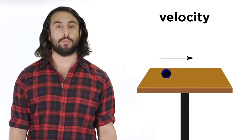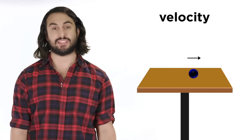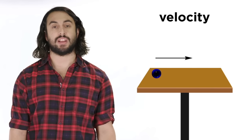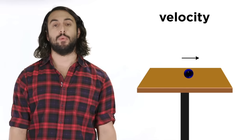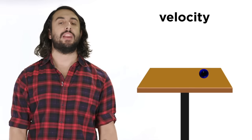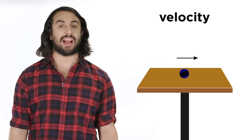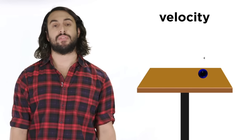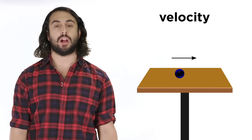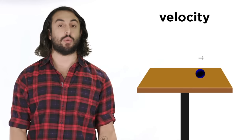For velocity, the vector will point forward as the velocity is positive, since it is moving in the forward direction, and the vector will move along with the marble, but it will decrease in magnitude as the marble slows down, until eventually disappearing when the marble comes to a rest, where it has zero velocity.